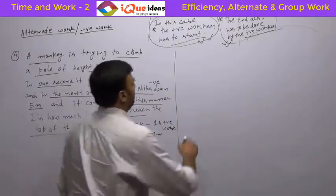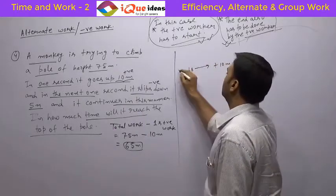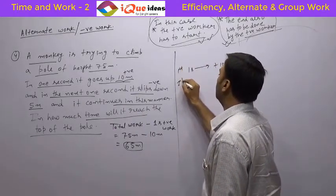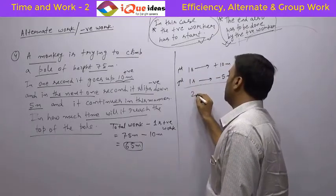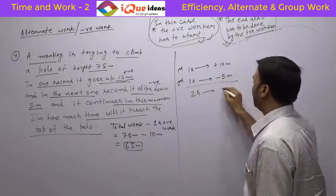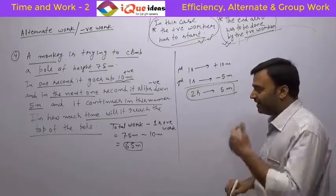Now let's see. The first one second, it goes up 10 meters. In the second one second, it slips down 5 meters. So in two seconds, it is covering 10 minus 5, that is 5 meters. Do not apply unitary method. We have already seen that.